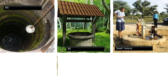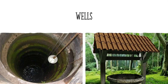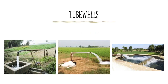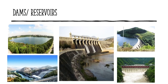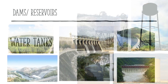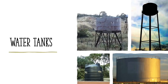Now let's take a look at some of the underground sources of water. We can also draw water from under the ground with the help of wells, tube wells, and hand pumps. Dams or reservoirs are structures which are built across a river or a stream to retain or hold the water. We also get water into our taps from water tanks which are on top of our buildings.